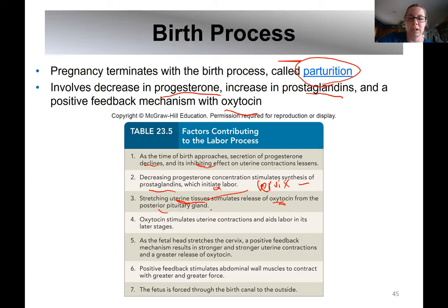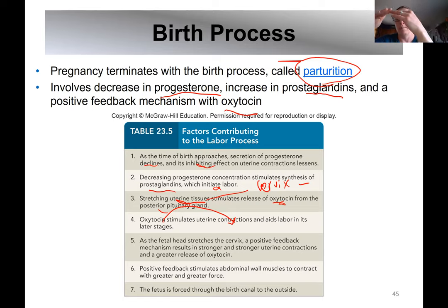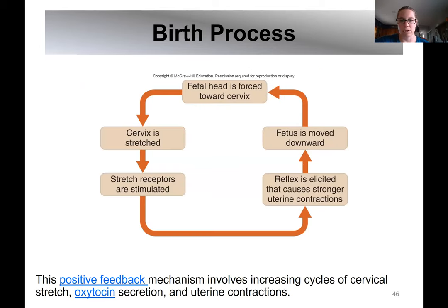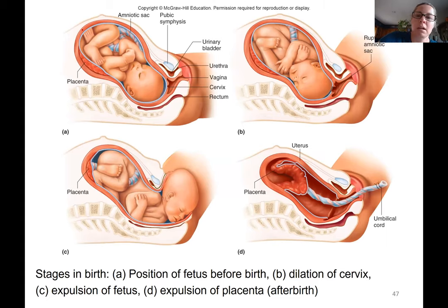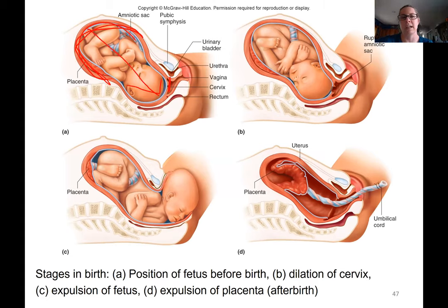Oxytocin stimulates uterine contractions. As the uterus contracts and pushes — hopefully with baby's head down, otherwise it's a breech position — baby's head is pushed down onto the cervix. As baby's head presses against the cervix, the cervix thins out, which is called effacement, and it also dilates and opens up. Fully dilated is 10 centimeters.